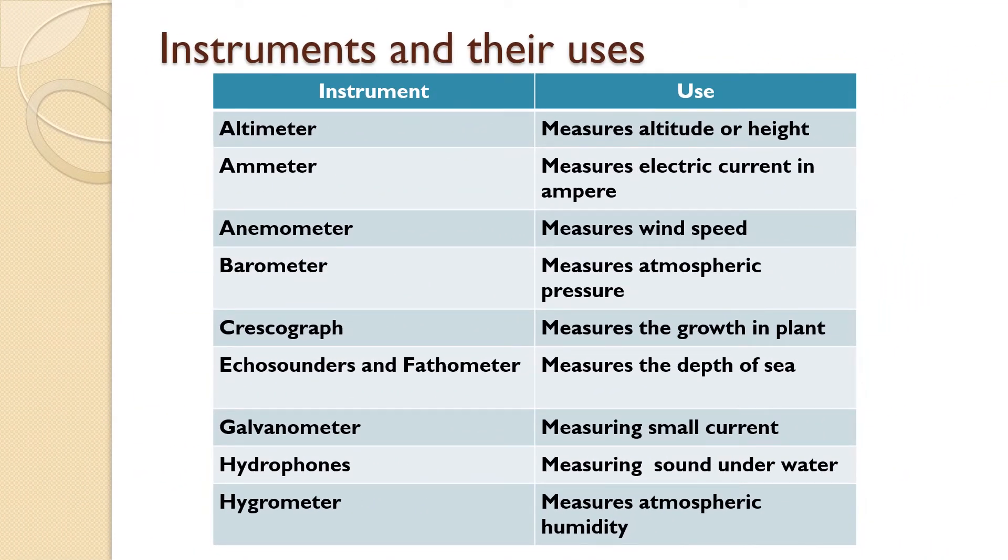Different instruments like altimeter that will measure altitude or height, ammeter is to measure electric current in ampere, anemometer is to measure the wind speed.